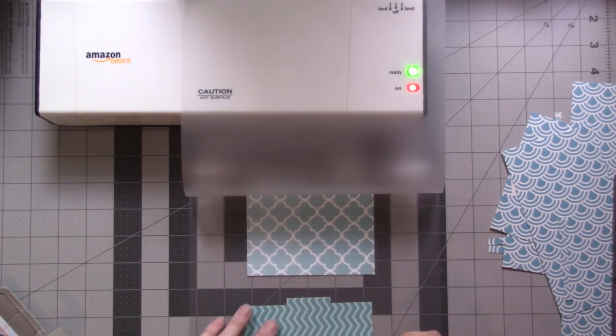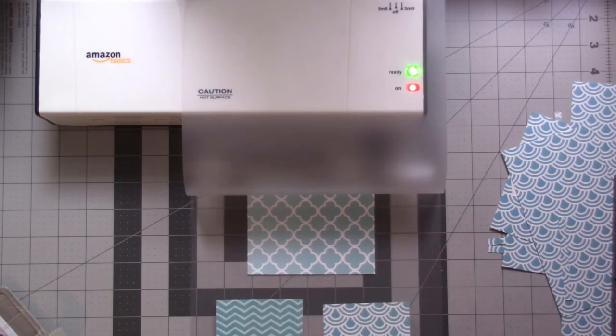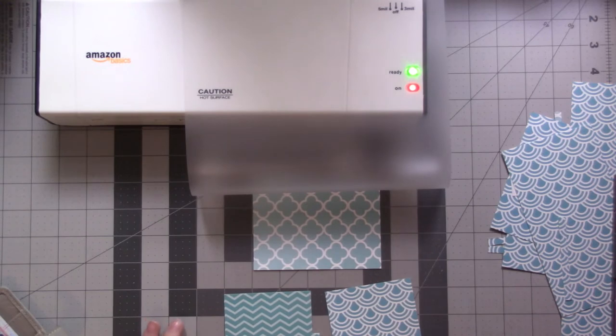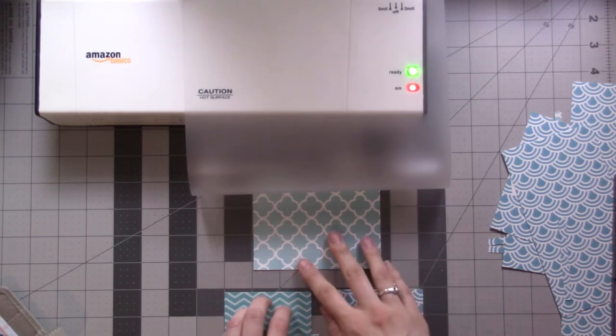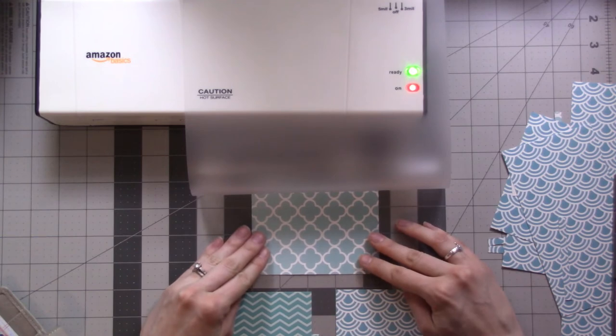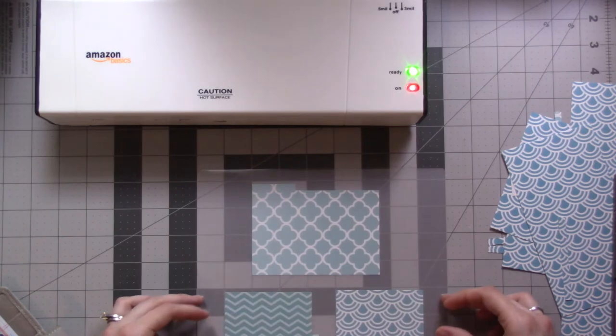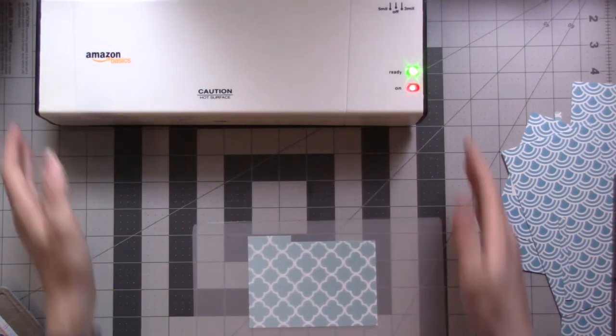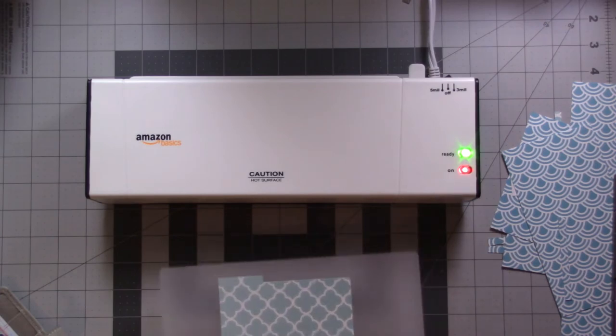I'm just going to lay these down, see if they'll fit this way. Maybe not, maybe I'll just do these two like this. I'm going to line it up with my cutting mat here and do them at least straight to make it easier to cut. And because the laminator has been preheated and ready to go this whole time, here we go very gently.